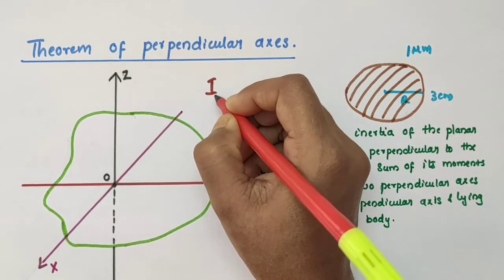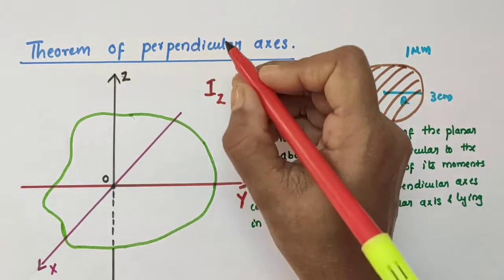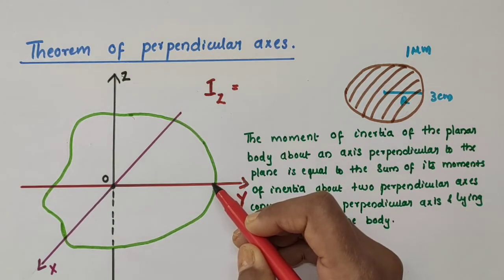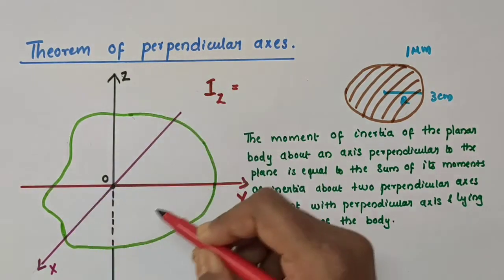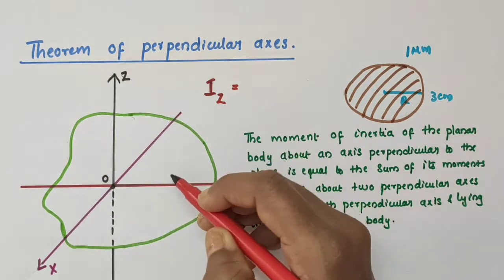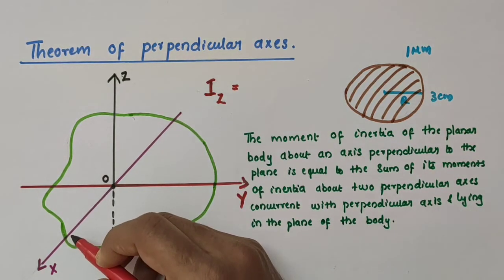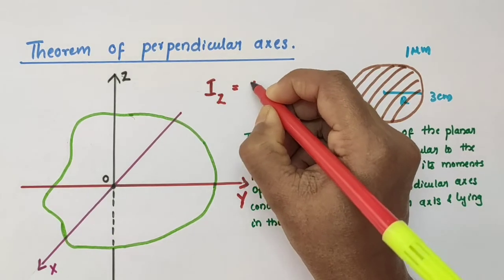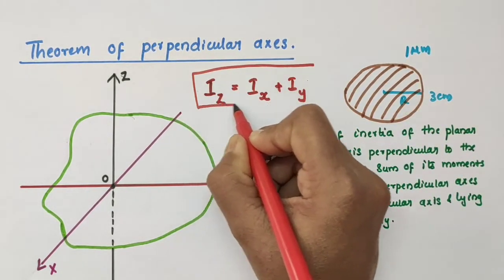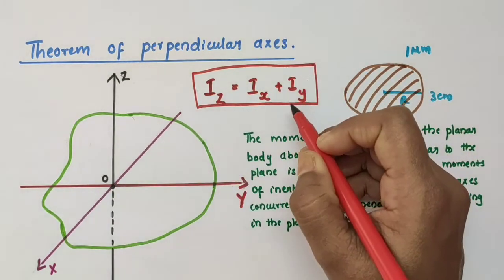I is usually used to represent moment of inertia. So the moment of inertia of this planar body about the Z axis — represented as I_Z — will be equal to the sum of the moment of inertia about the other two perpendicular axes concurrent with the Z axis and lying in the plane of the body. Here X and Y are those two axes, so the moment of inertia about the Z axis equals the moment of inertia about the X axis plus the moment of inertia about the Y axis: I_Z = I_X + I_Y.